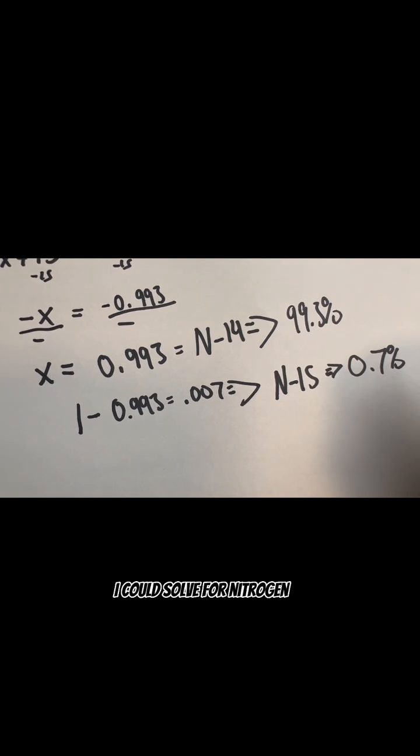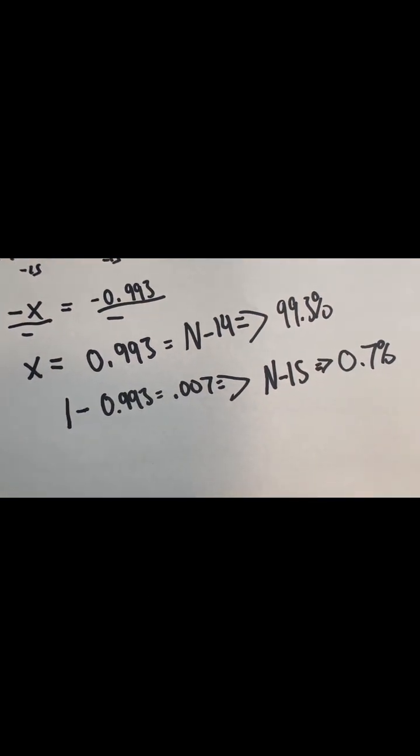Once I know my x, I can solve for nitrogen-15, which is 0.7%. And that's it, everyone.